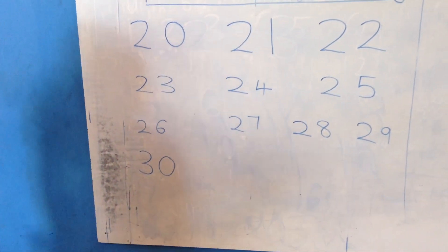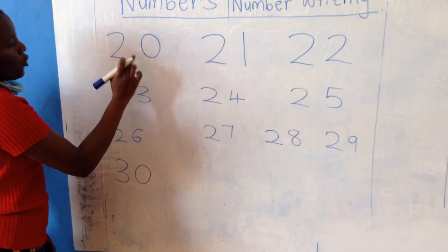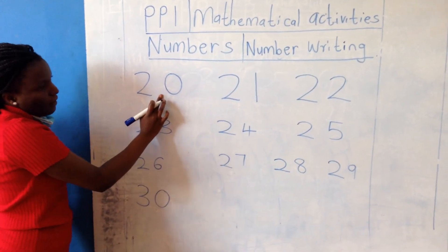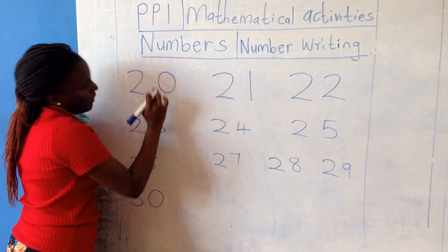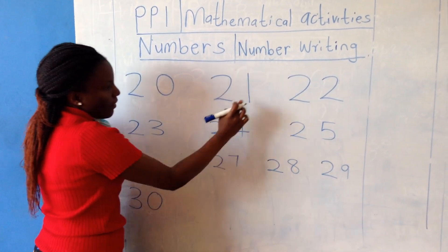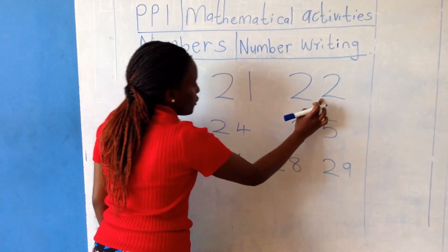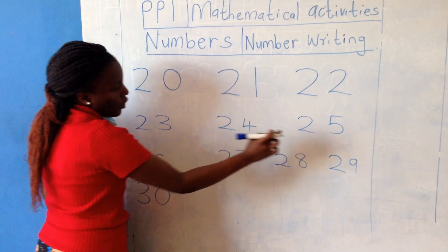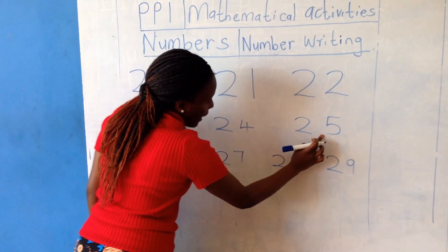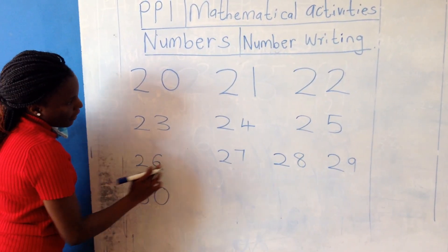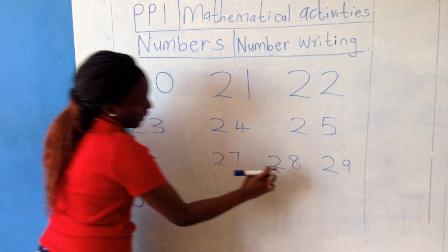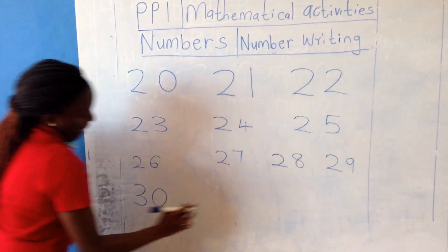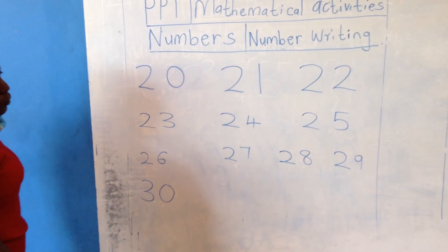You repeat after teacher. Say number twenty: twenty, twenty-one, twenty-two, twenty-three, twenty-four, twenty-five, twenty-six, twenty-seven, twenty-eight, twenty-nine, thirty.